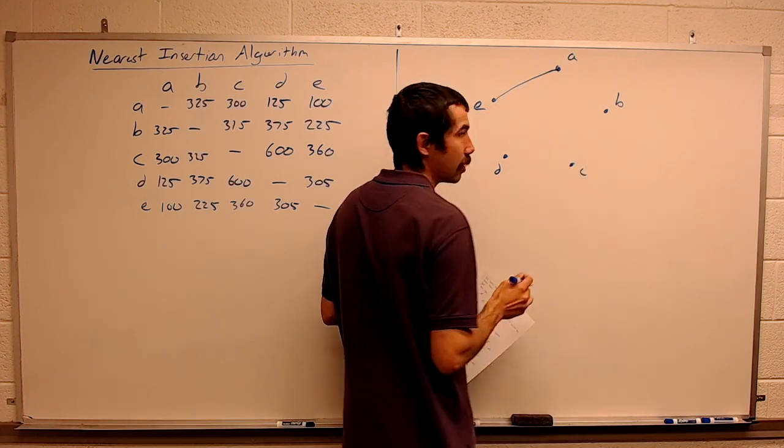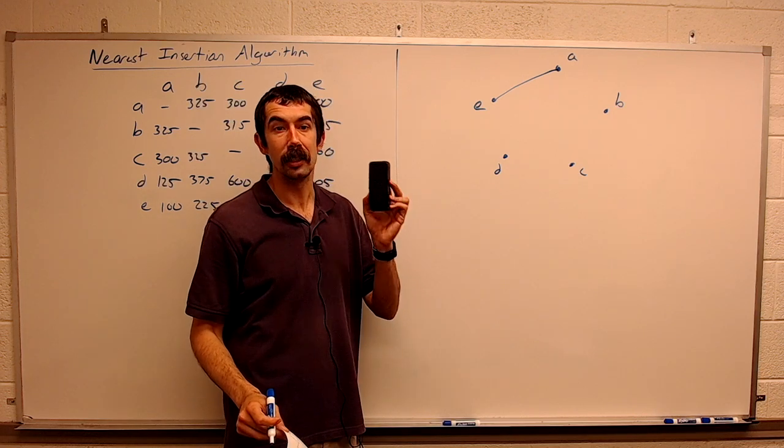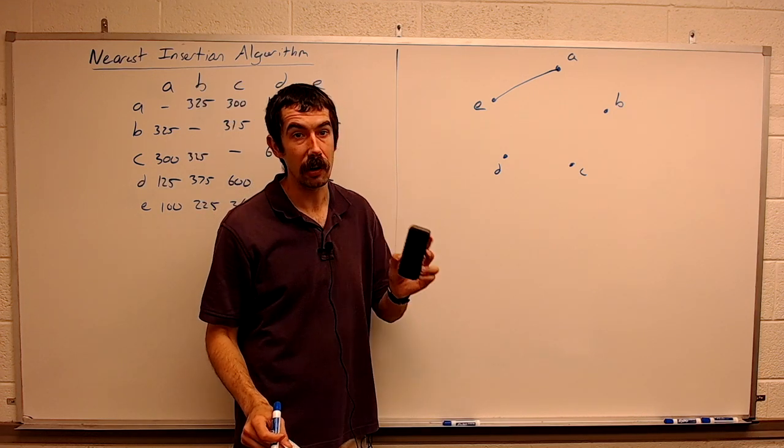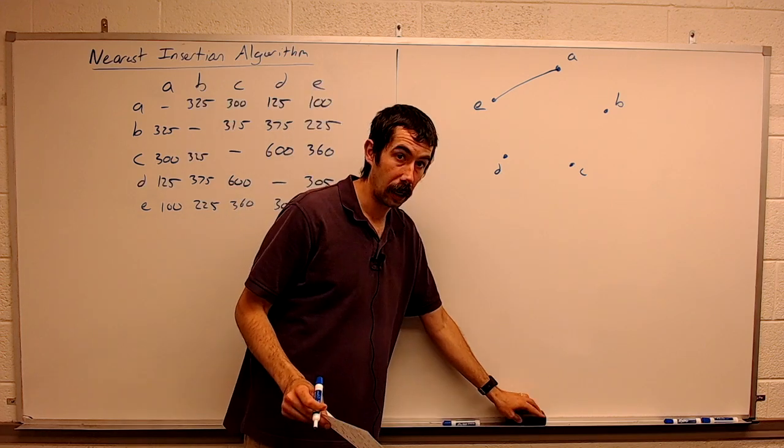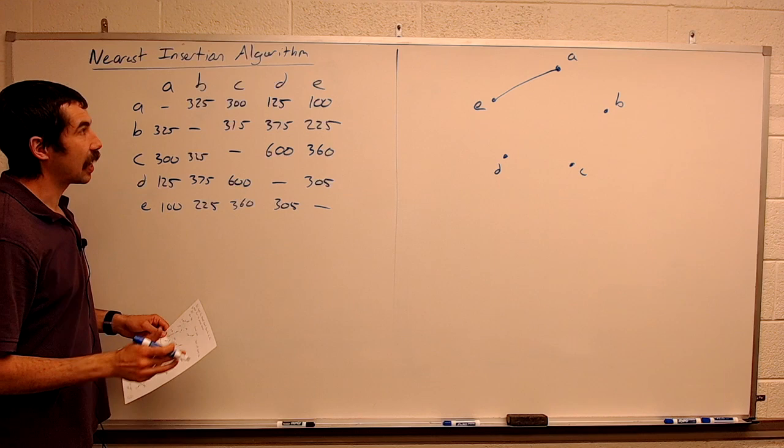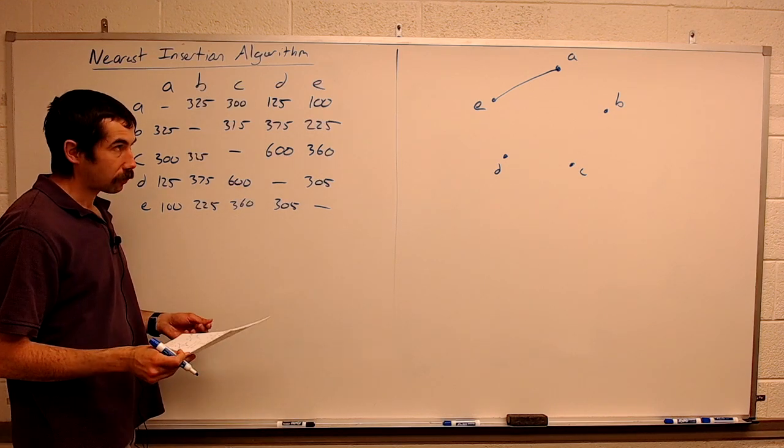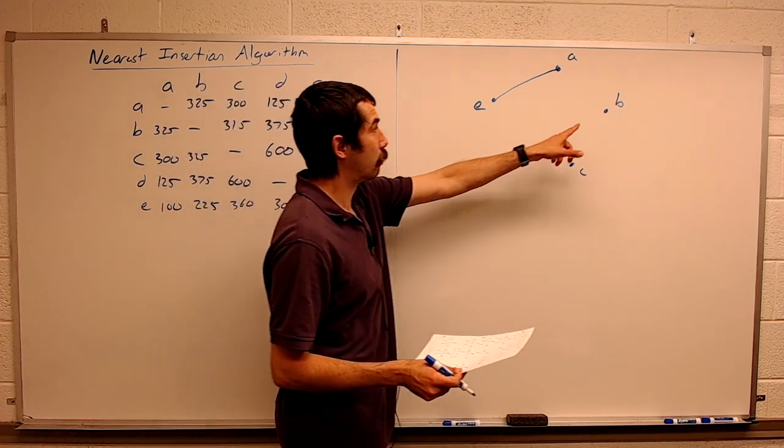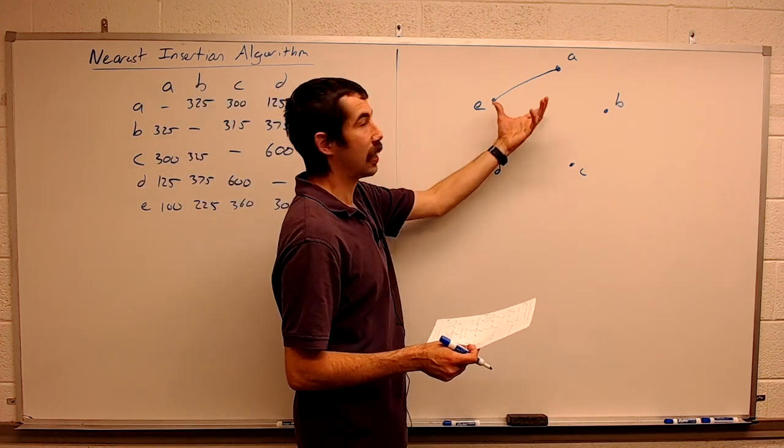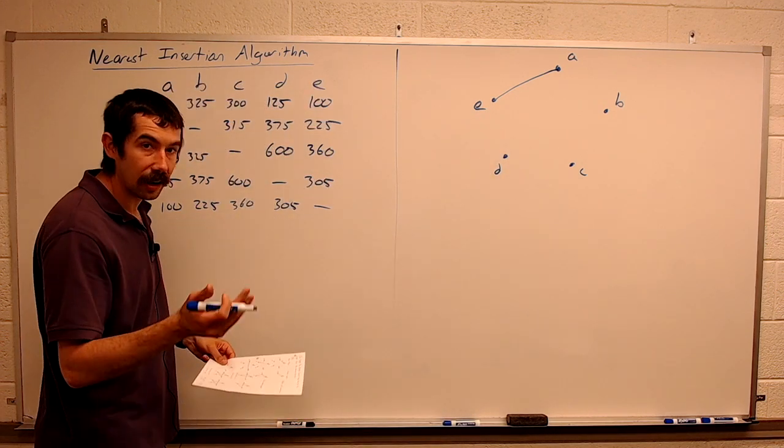The thing with the nearest insertion algorithm is you need an eraser, because sometimes we're going to be deleting edges. If you use pen, get ready to scratch things out. What is the next step? The next step is we find the vertex B, C, or D that's closest to either A or E.